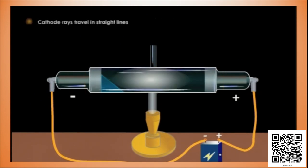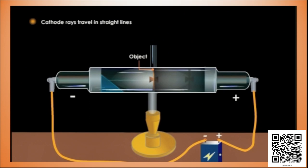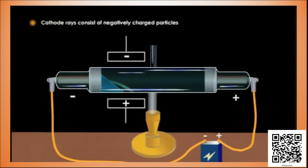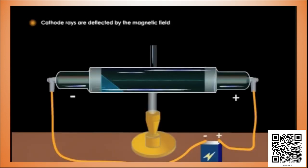Properties of cathode rays: Cathode rays travel in straight lines. When an opaque object is placed in the path of the cathode rays, a shadow is cast on the glass wall opposite to the cathode, showing that cathode rays travel in straight lines. Cathode rays consist of negatively charged particles — the rays deflect towards the positive plate when the tube is exposed to an electric field, because the negatively charged particles get attracted towards the positive plate. Cathode rays are also deflected by a magnetic field, following a curved path when exposed to it.